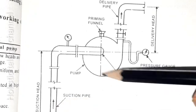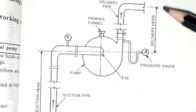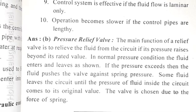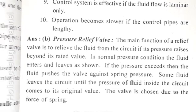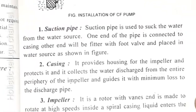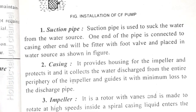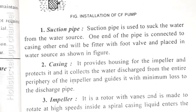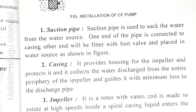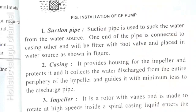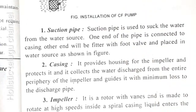Main parts are suction pipe, casing, impeller, delivery pipe, delivery head, pressure gauge, foot valve and strainer. Suction pipe: it is used to suck the water from the water source or reservoir. One end of the pipe is connected to the casing and the other end is fitted with the foot valve and placed in the water source.